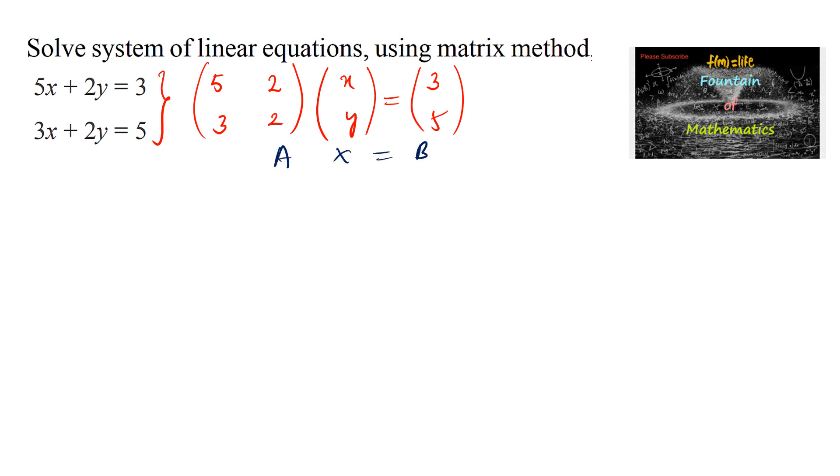We know that for the matrix method where the determinant is not equal to 0, X is equal to A inverse into B, where A inverse is equal to 1 by determinant into adjoint of matrix A.